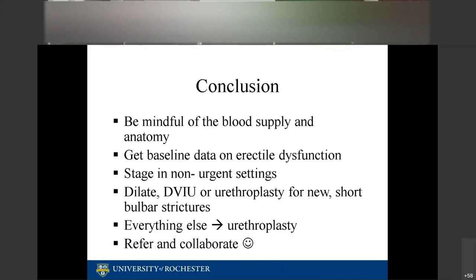For short bulbar urethral strictures — specifically the flimsy ones, not the very dense ones — DVIU or dilation may be offered. For pretty much everything else, you want to refer for urethroplasty.